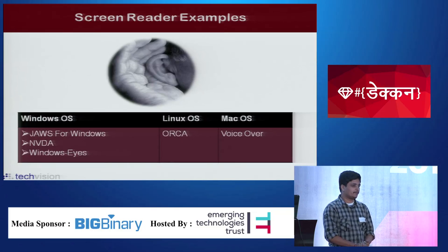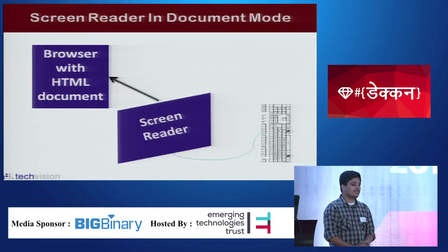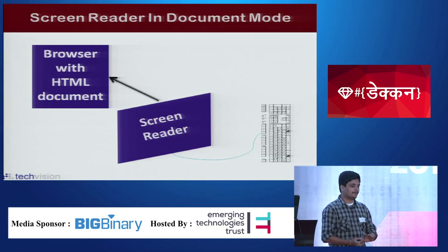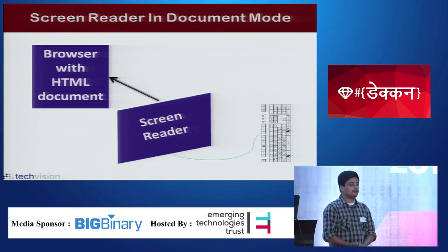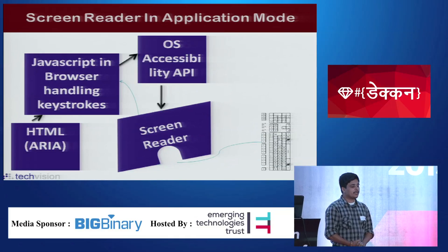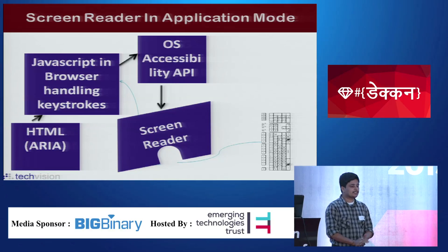How does a screen reader actually work? A screen reader has two different modes: document mode and application mode. In document mode, the screen reader reads out whatever is on the screen and gives audio output to the user. In this mode, the user is not able to give any input to the computer — like if you are filling a form, you cannot give keyboard entry while in document mode. It just reads what is on the screen. To give input you have to be in application mode, which takes input from the user, like when you are filling a form and entering text.